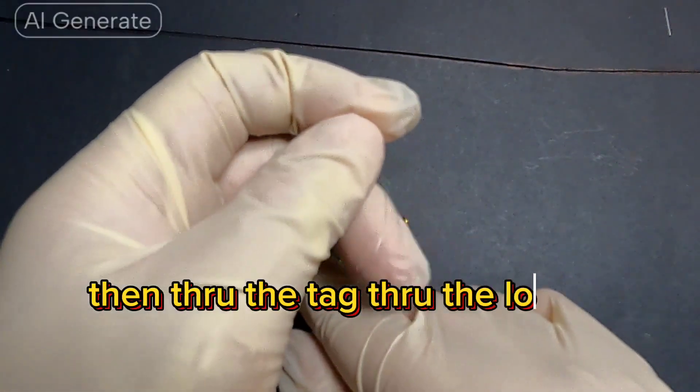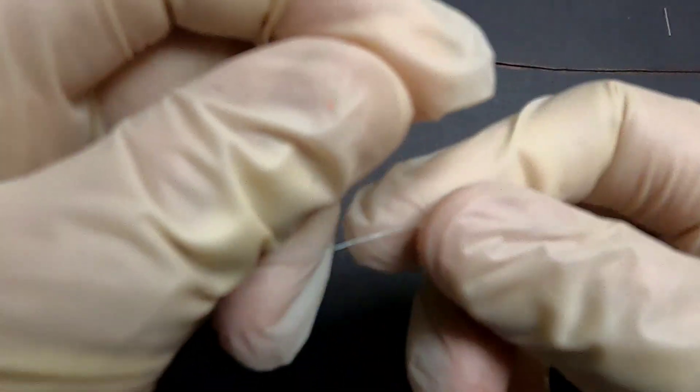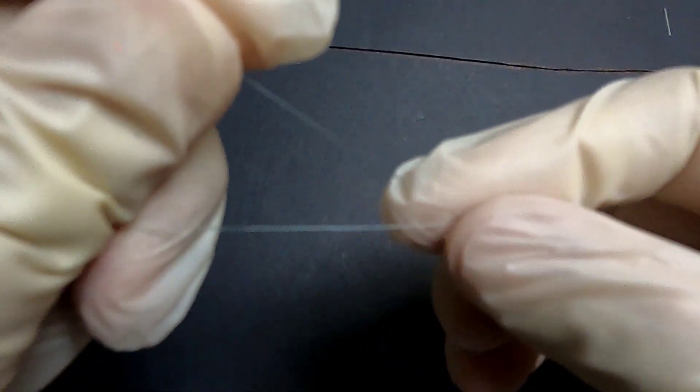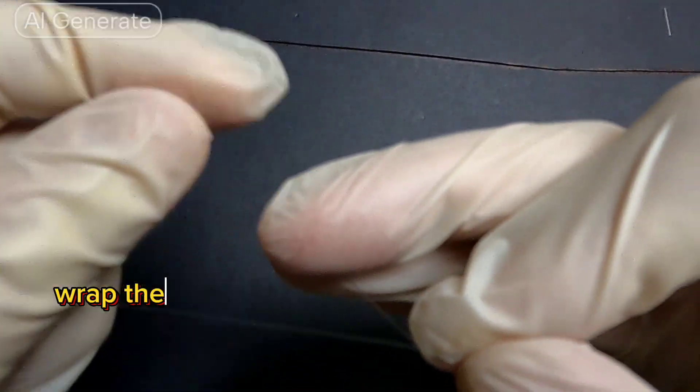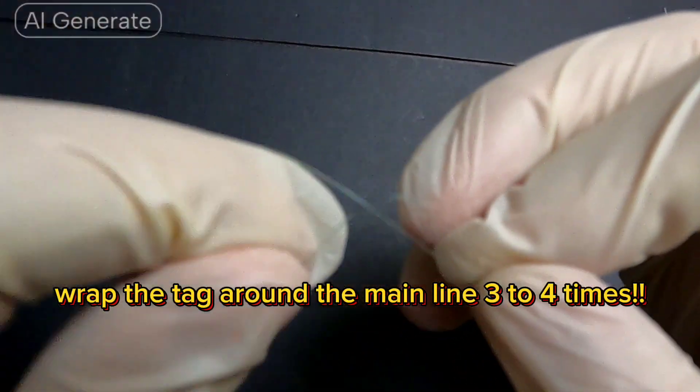Then through the tag, through the loop. Wrap the tag around the main line 3 to 4 times.